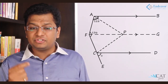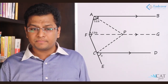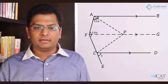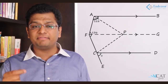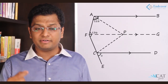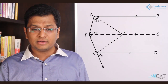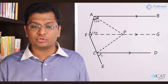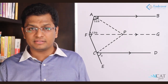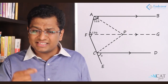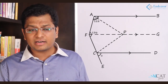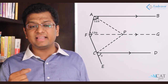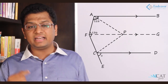The upper part of angle F is 52 degrees, and the entire angle F is 136 degrees, so angle CFG = 136 − 52 = 84 degrees. Angle CFG is a corresponding angle to x, so x = 84 degrees.